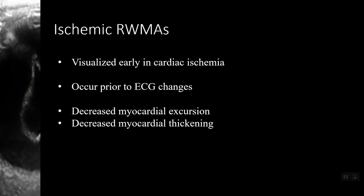Wall motion abnormalities can be seen as decreased myocardial excursion — decreased myocardial movement — as well as decreased myocardial thickening. Typically, these movement abnormalities will be described as hypokinesis, or decreased movement, or akinesis, which would be absence of movement. We will see some examples soon, but first, a little terminology.